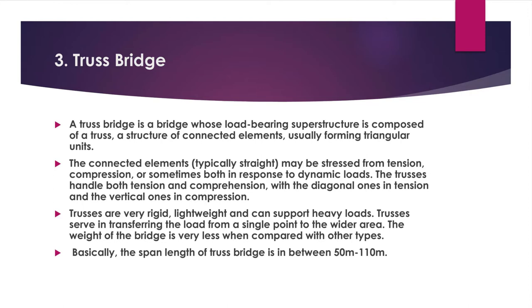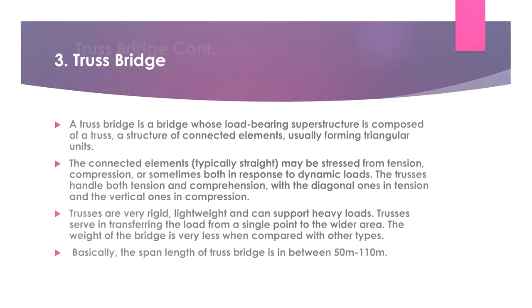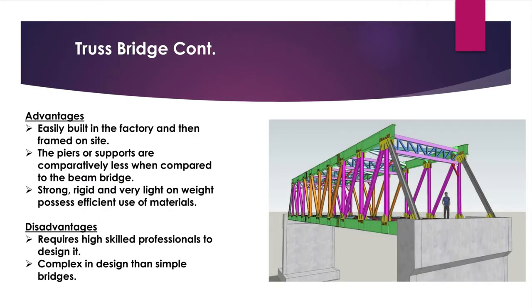The span length of truss bridges is between 50m and 110m. The advantages of truss bridges are: easily built in the factory and then framed on site; the piers or supports are comparatively fewer than in beam bridges; strong, rigid, and very light in weight with efficient use of materials. The disadvantages of truss bridges are: requires high-skilled professionals to design; complex in design compared to simple bridges.